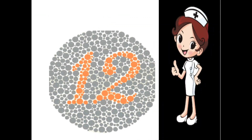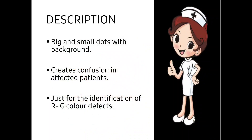Some of the plate descriptions are given here. Big and small dots are present at the background, and a number or a pathway should be seen in case of the Ishihara test. Big and small dots of different colors create confusion in the affected patient.